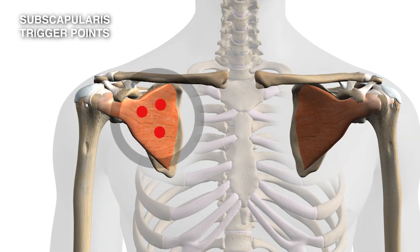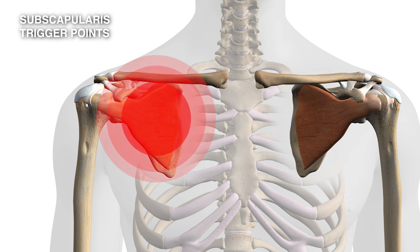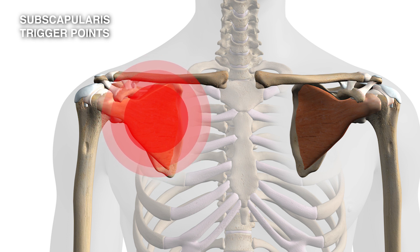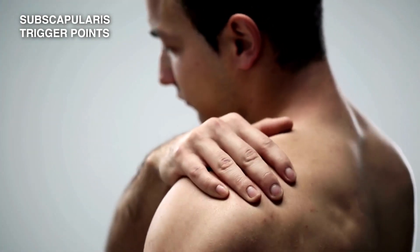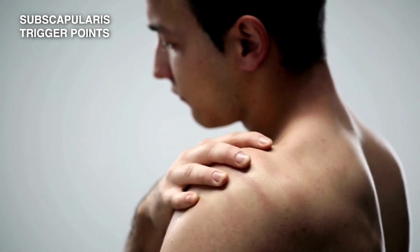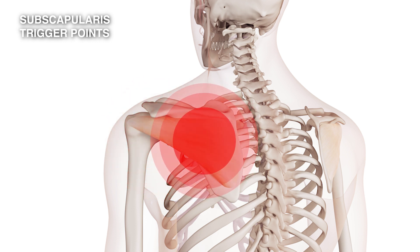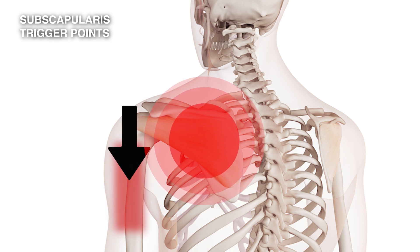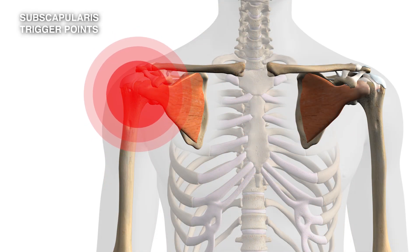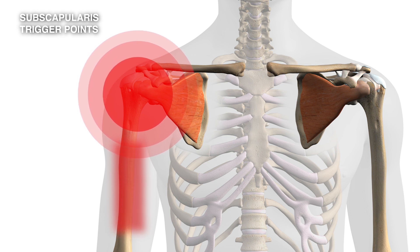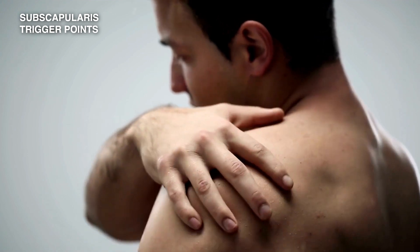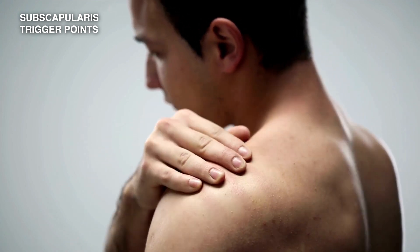Trigger points occur in the subscapularis and they're relatively common — you'll find there are three trigger points here. When the trigger points are active they set off a pain concentrated primarily over the back of the joint, occurring over the upper part of the back of the arm and extending a little bit over the scapula. When more active, they set off pain covering the whole scapula, a little bit down the arm, and may also spread to the front of the shoulder and down the inside of the upper arm. So it's a slightly complex pattern, but remember that the primary pain area is over the back of the shoulder.